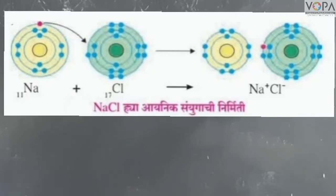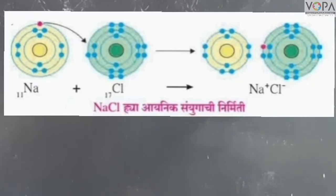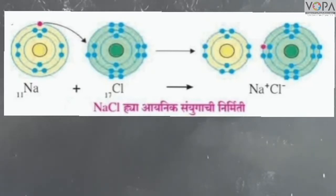Chlorine is used by the electron. But the chlorine is used by the runa prabhata. As a result, the chlorine is used by the dhana and runa.